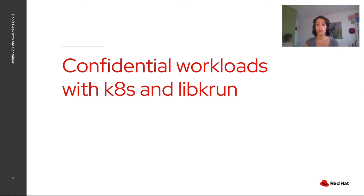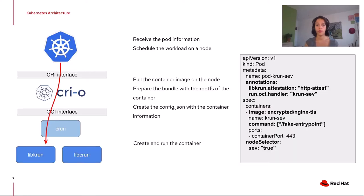Now I'm going to focus on confidential workloads with Kubernetes. Kubernetes is the orchestrator and is responsible for scheduling the workload on a node. When you want to deploy a pod, you submit a description in the form of a YAML file. When the workload is scheduled, Kubernetes passes the information to the container engine — in our case, CRI-O. The container engine is responsible for pulling the container image onto the node, preparing the bundle with the root filesystem of the container, creating the configuration, and passing this information to the OCI runtime. The OCI runtime is the actual launcher of the container — in our case, CRUN.